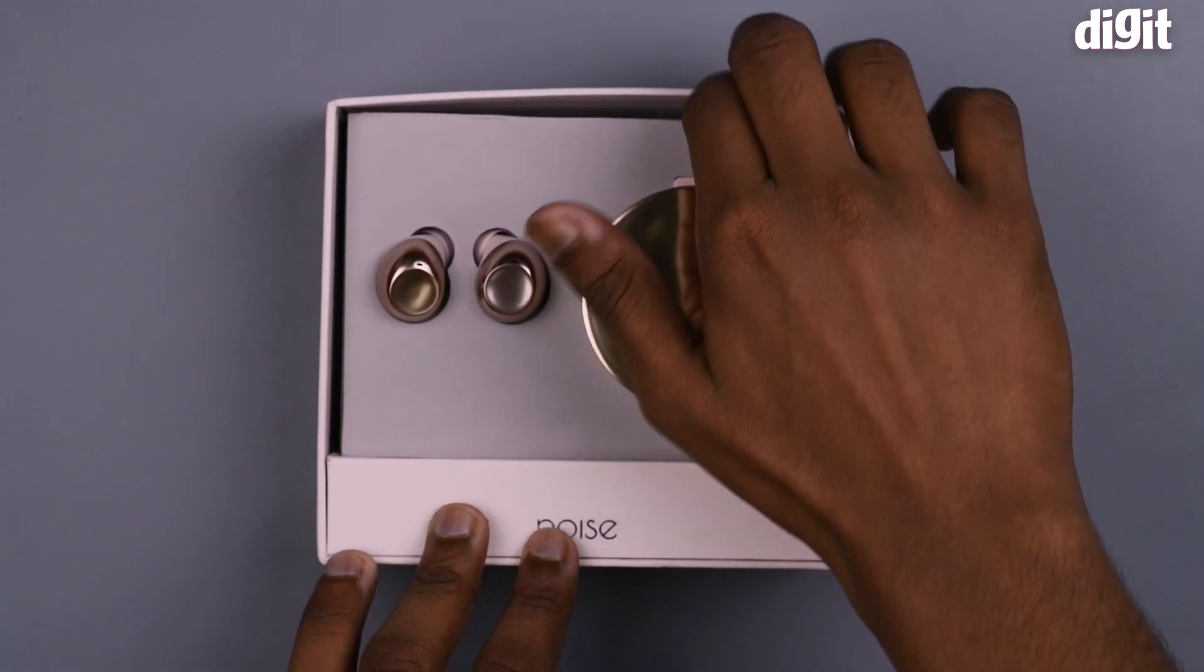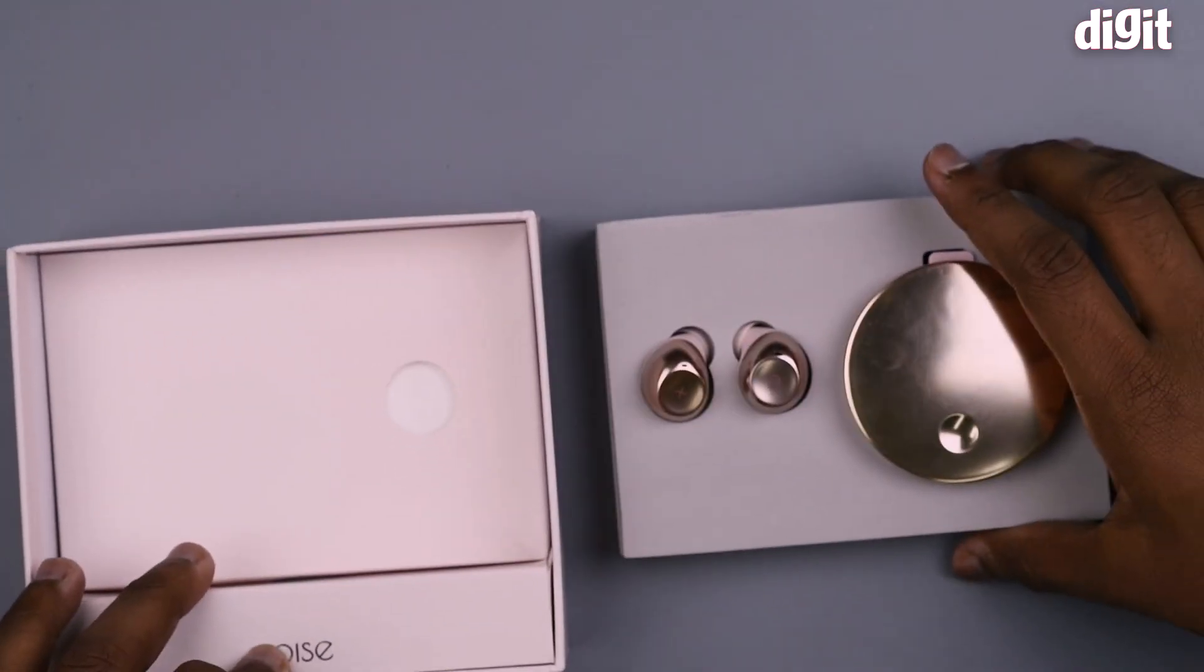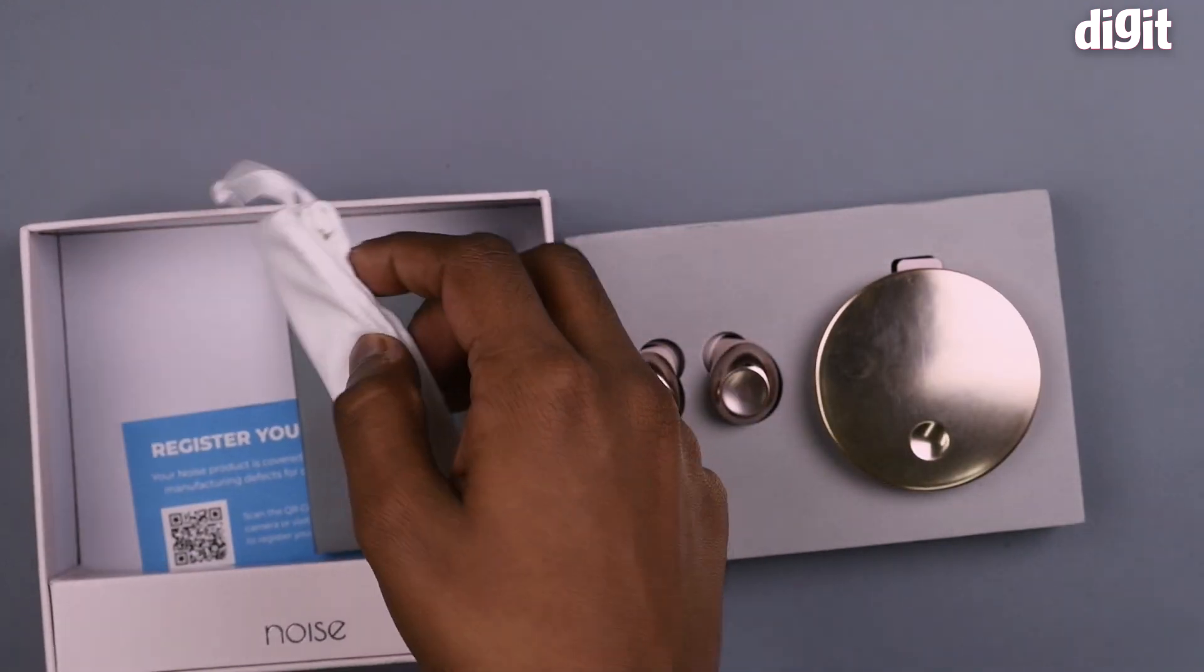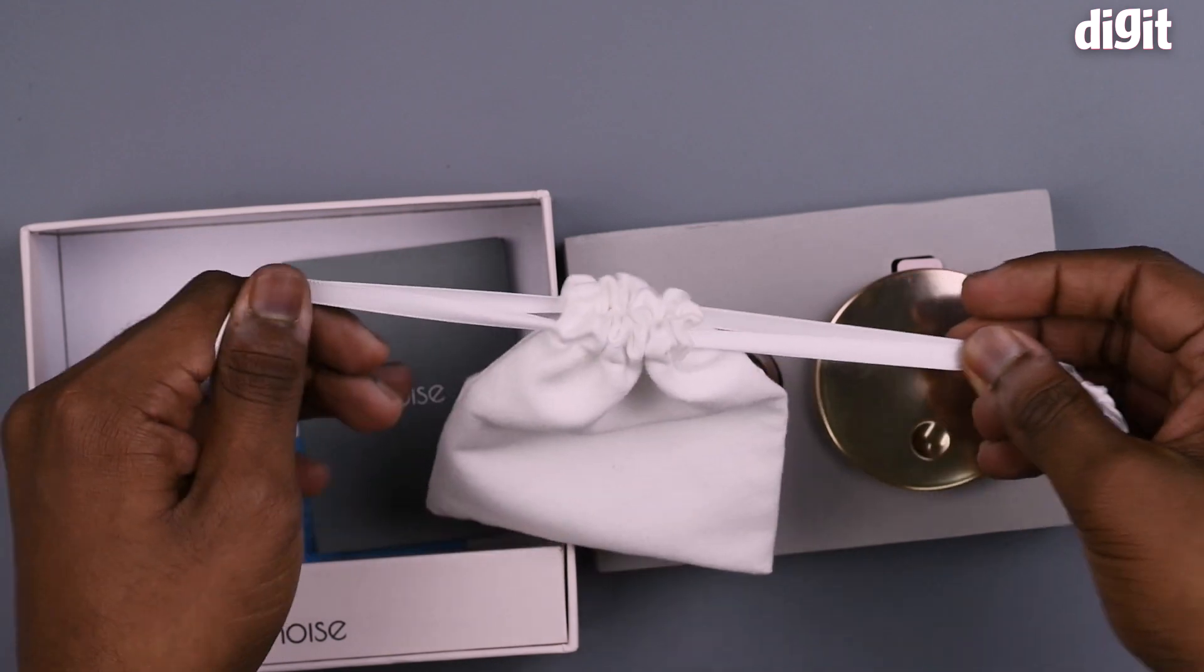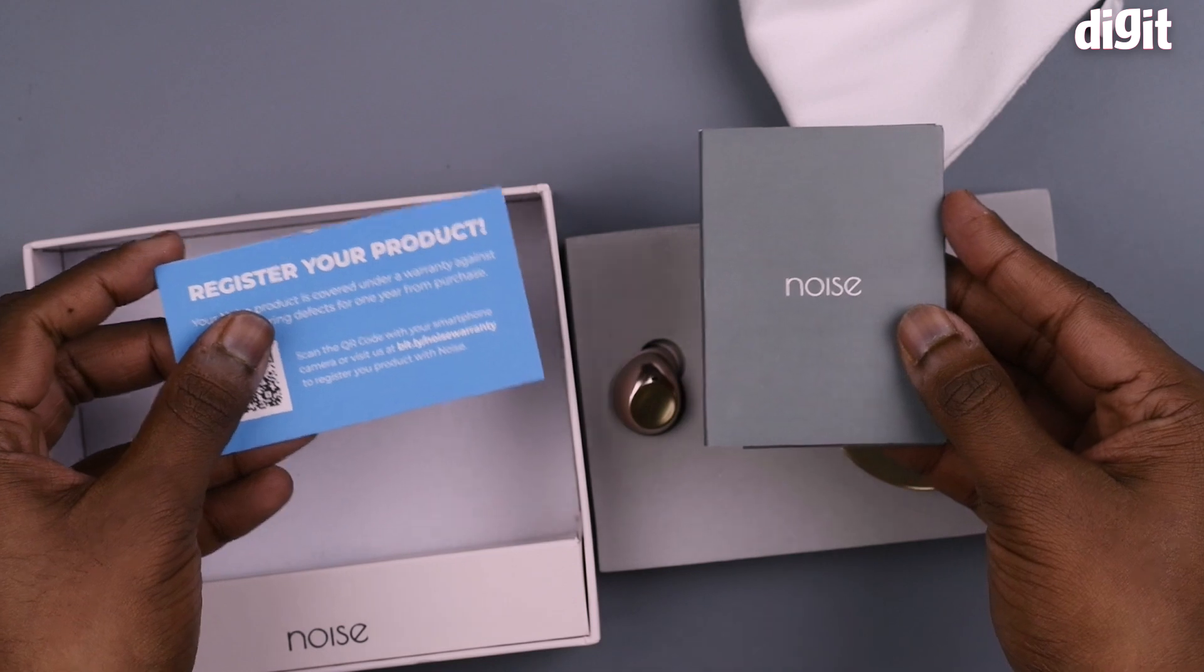The box contains the earbuds themselves with a charging case. It also contains a pouch for you to carry your earbuds in, along with a user manual and a warranty card.